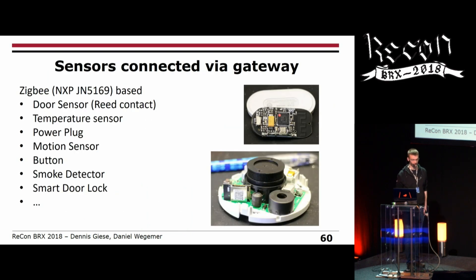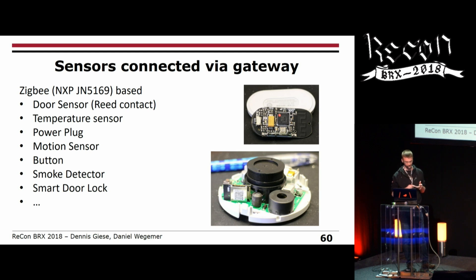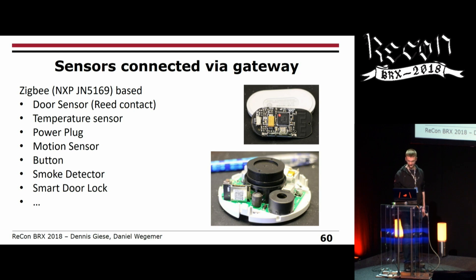For the sensors, there are many different types available — they all use the same NXP ZigBee chipset. You have door sensors, temperature sensors, power plugs you can control remotely, motion sensors, buttons you can assign actions to, smoke detectors, smart door locks, and more.